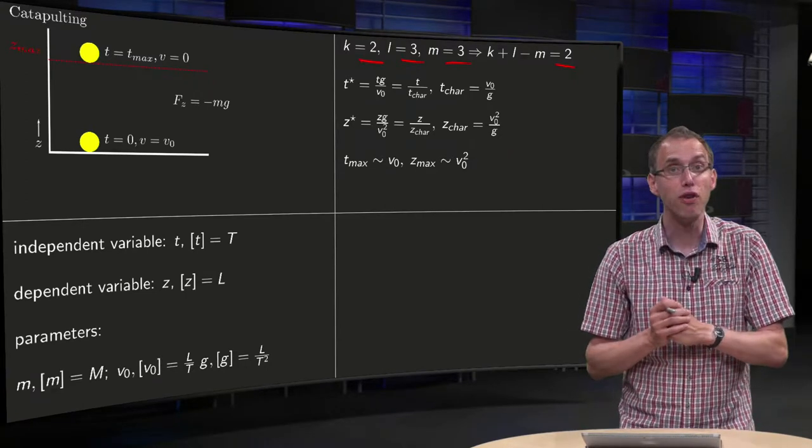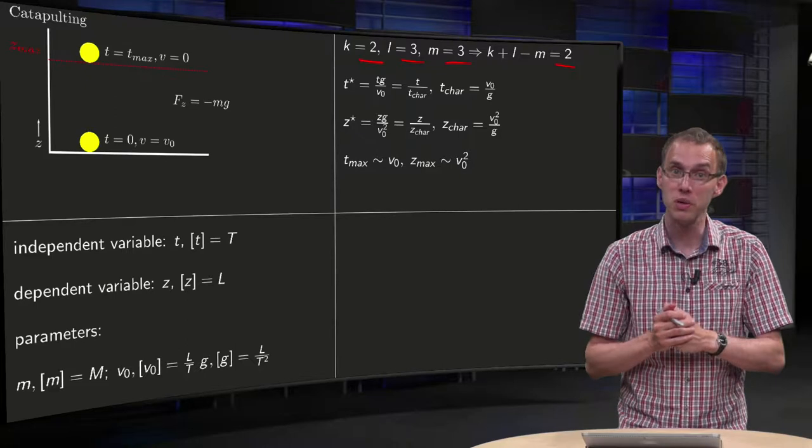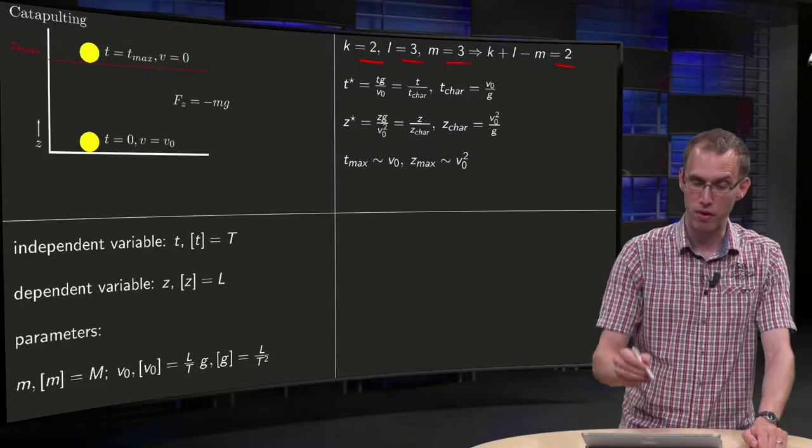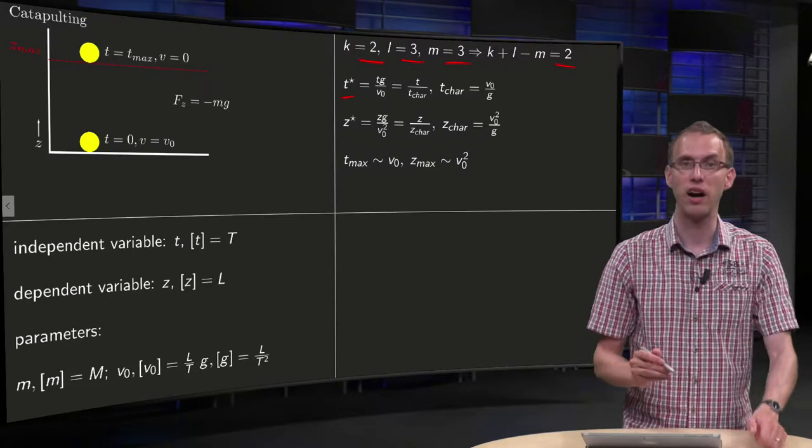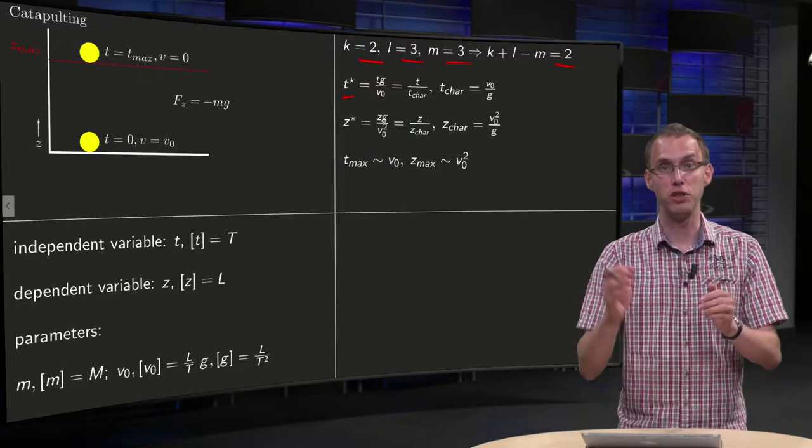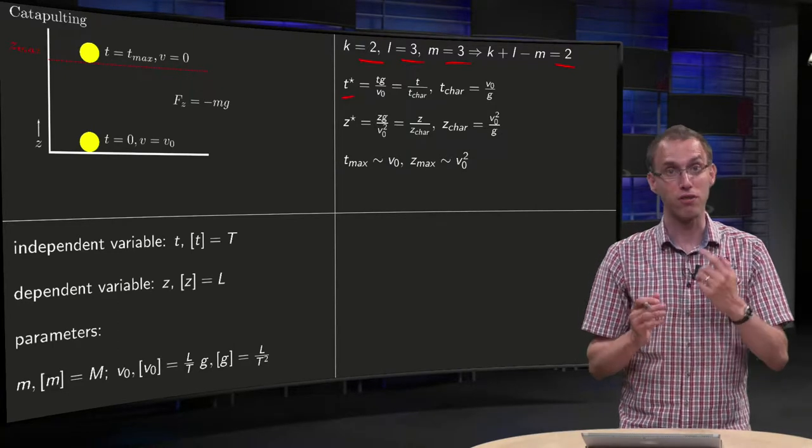So how can we try to form dimensionless quantities? Well, for example, we can form a dimensionless quantity called t* by using t times g over v0. Check for yourself that this is indeed dimensionless.